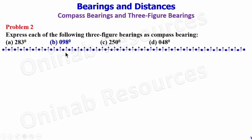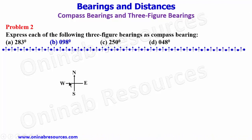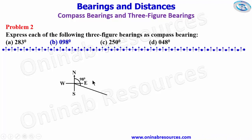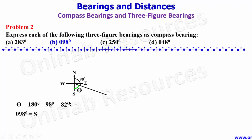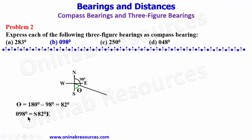For B, we have 098 degrees. Starting from the north, 90 plus 8 gives 98, and we draw the line. To get the compass bearing equivalent of 098 degrees, we need this angle, which we call theta. Theta equals 180 minus 98 degrees, which equals 82 degrees. So 098 degrees equals south 82 degrees east as the compass bearing equivalent.